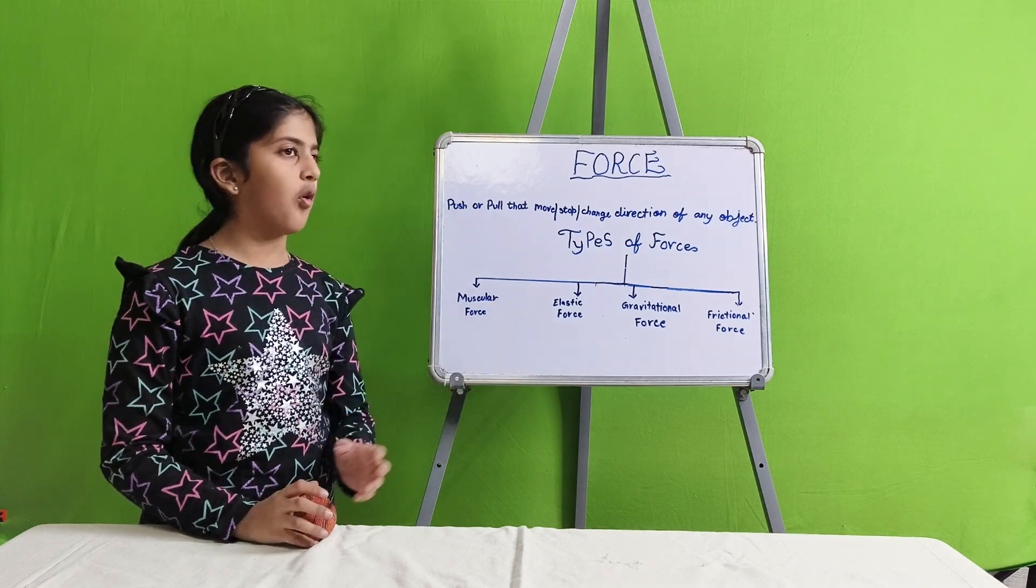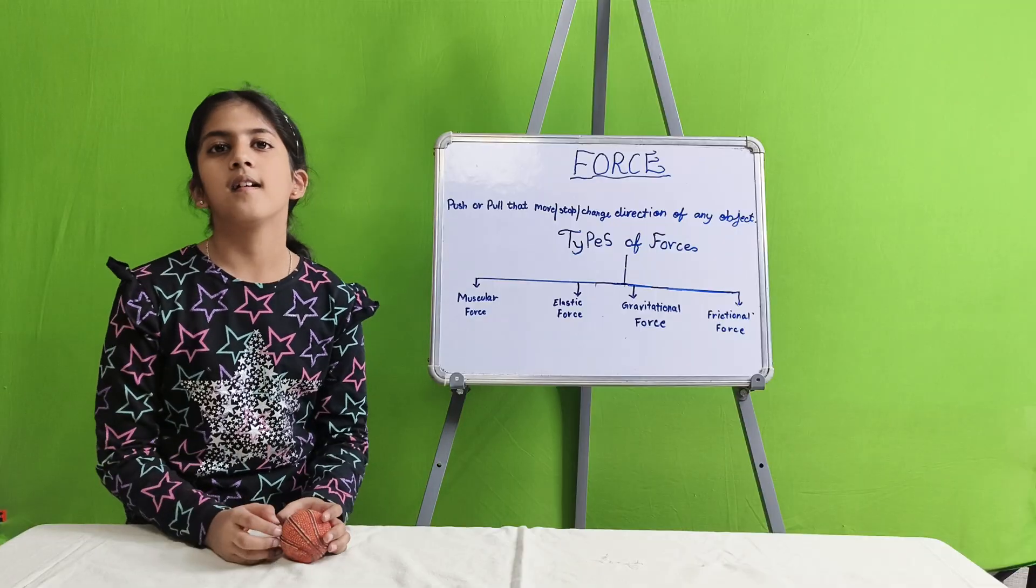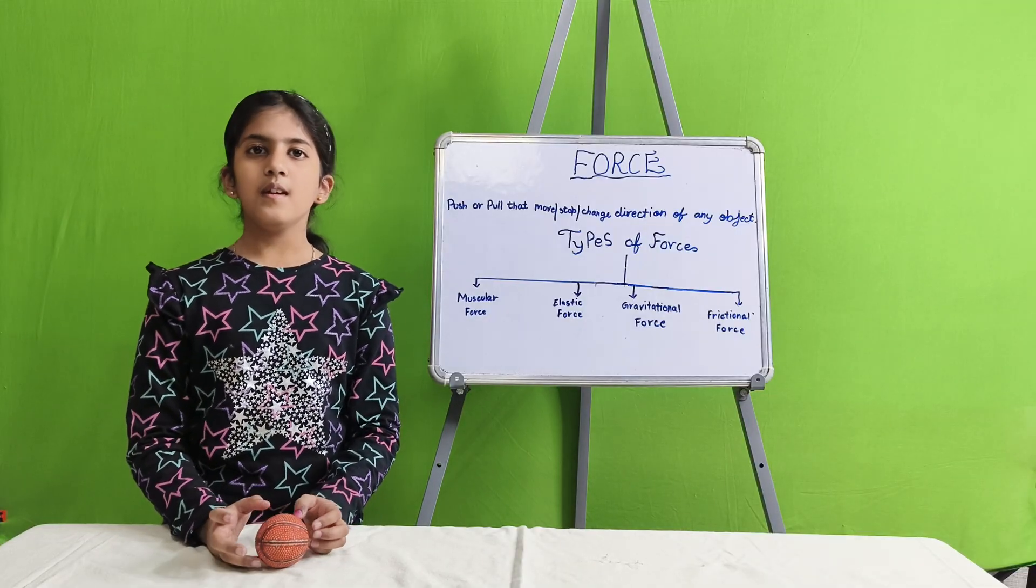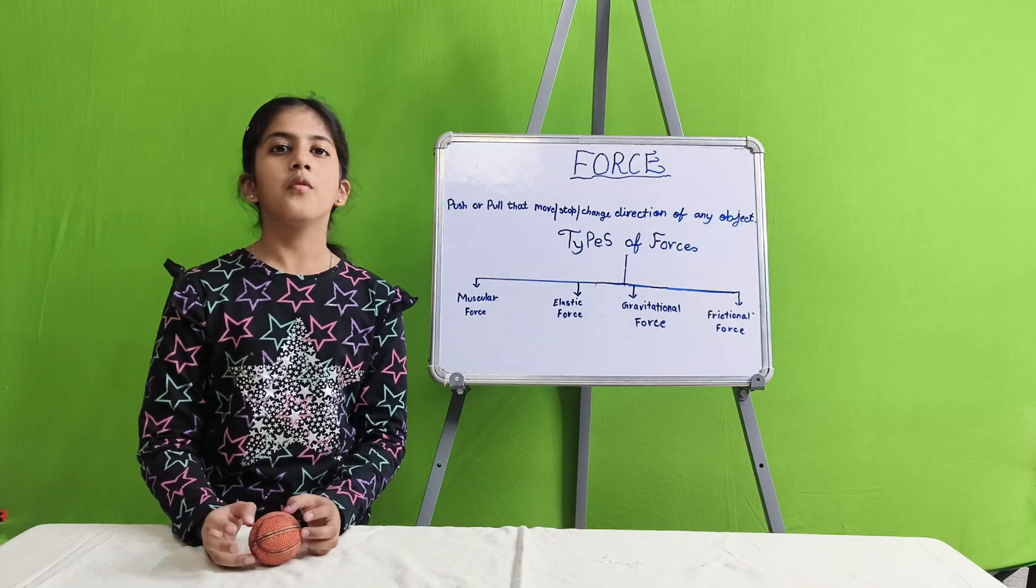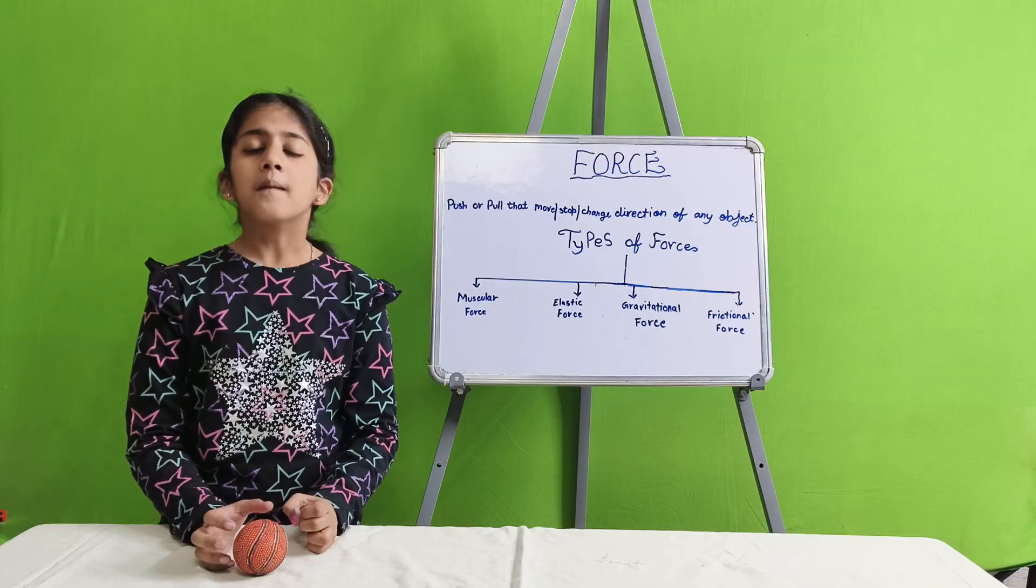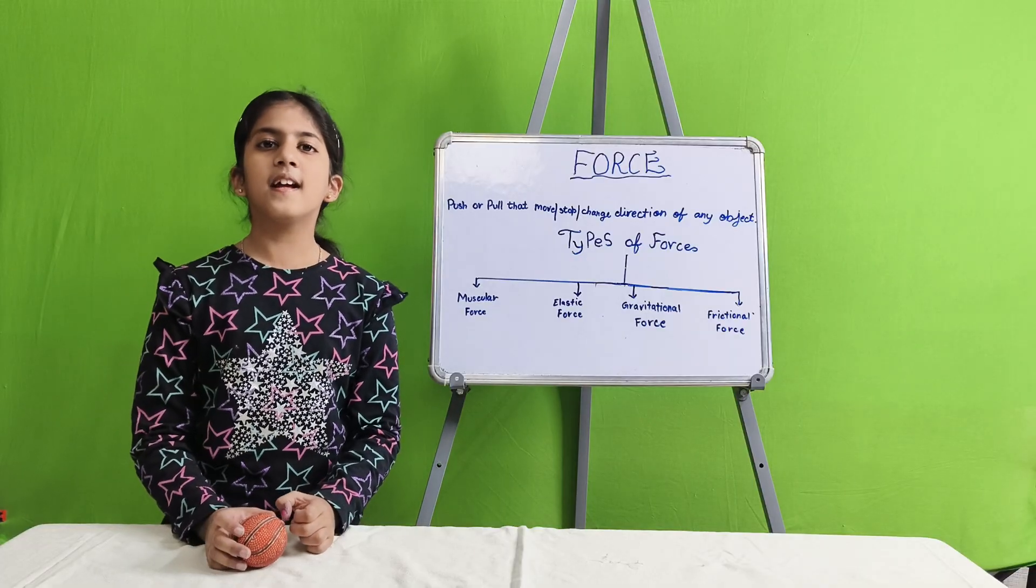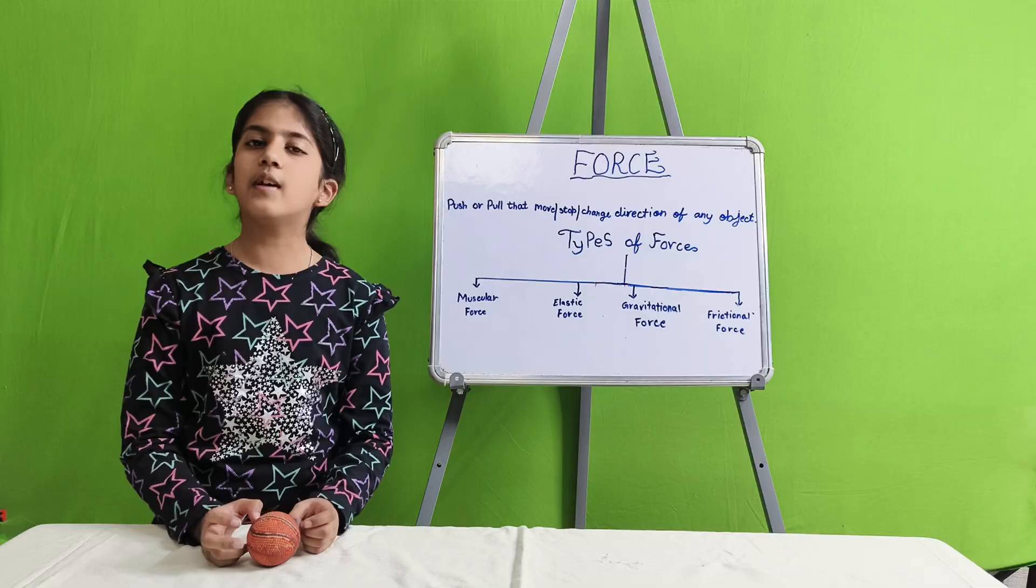Next is elastic force. Elastic force is a force used by springs. For example, springs are there in weighing scales so that we can weigh objects. Other example is springs are there in trampolines so that we can bounce on them for a very long time.